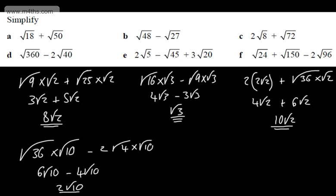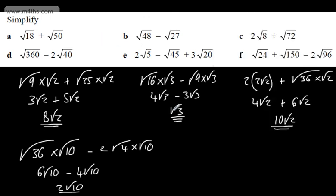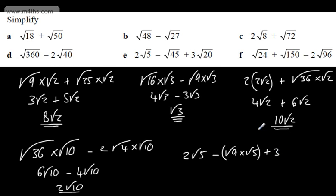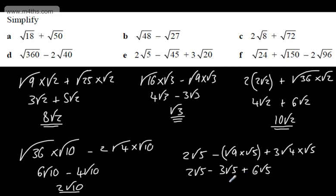It's often nice to check these on a calculator, but remember it will be a non-calculator exam question. For 2 root 5 minus root 45 plus 3 root 20: root 45 is root 9 times root 5, giving 3 root 5, and root 20 is root 4 times root 5, giving 2 root 5. So we have 2 root 5 minus 3 root 5 plus 6 root 5, which gives us 5 root 5 in total.